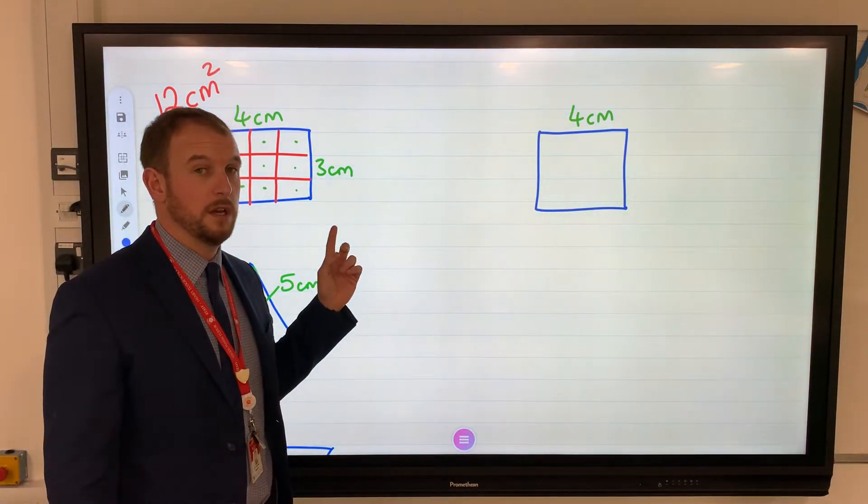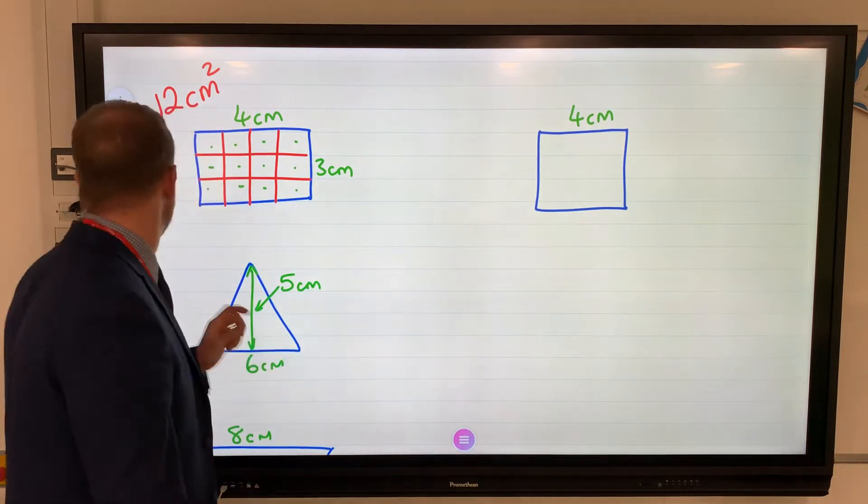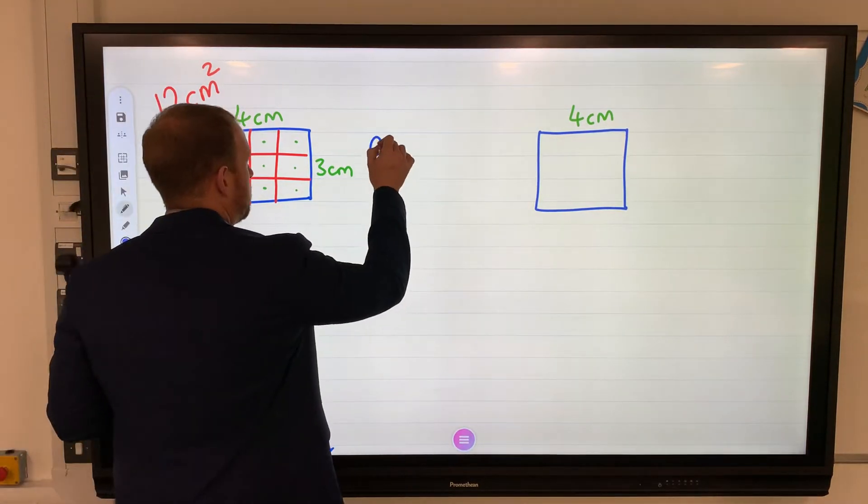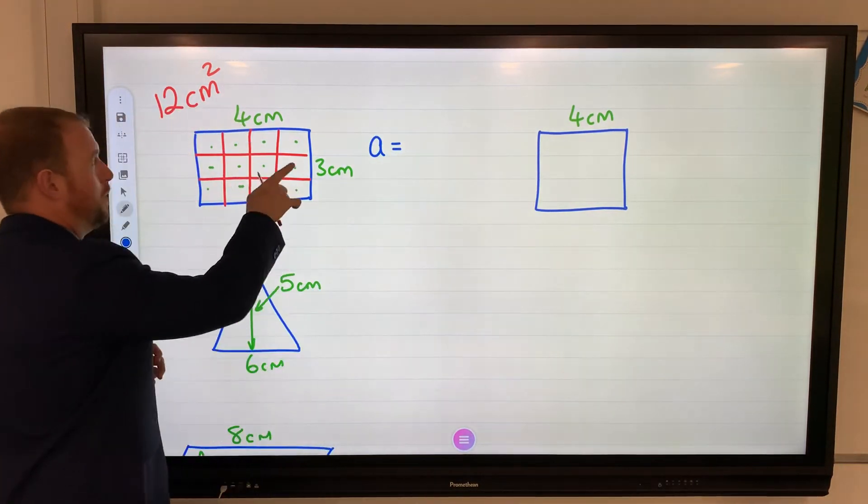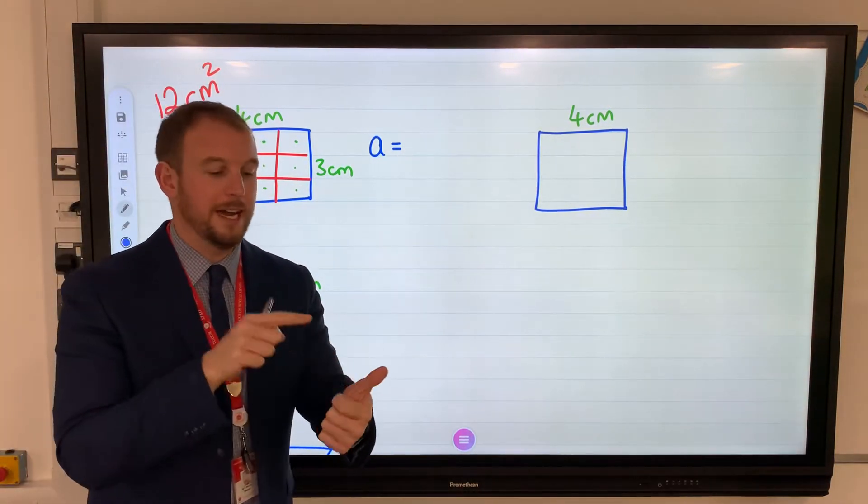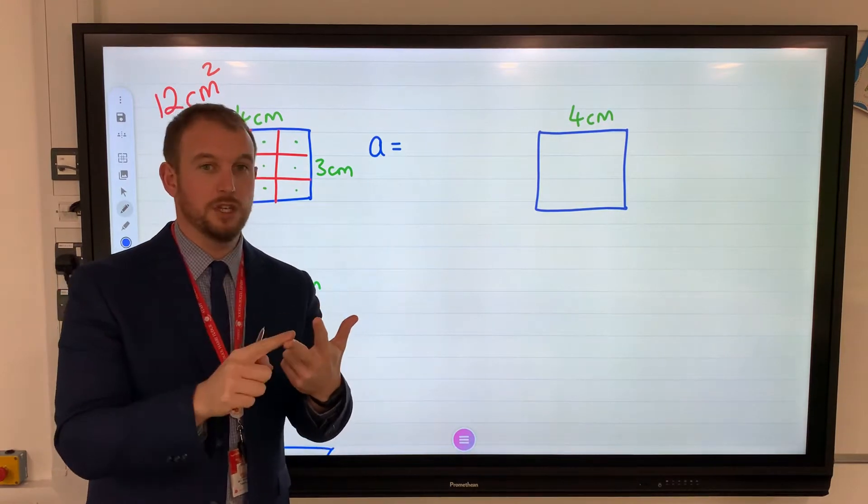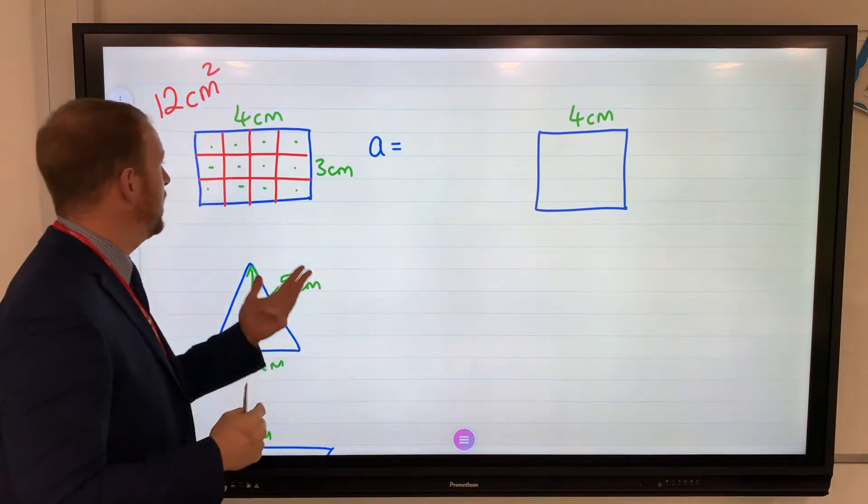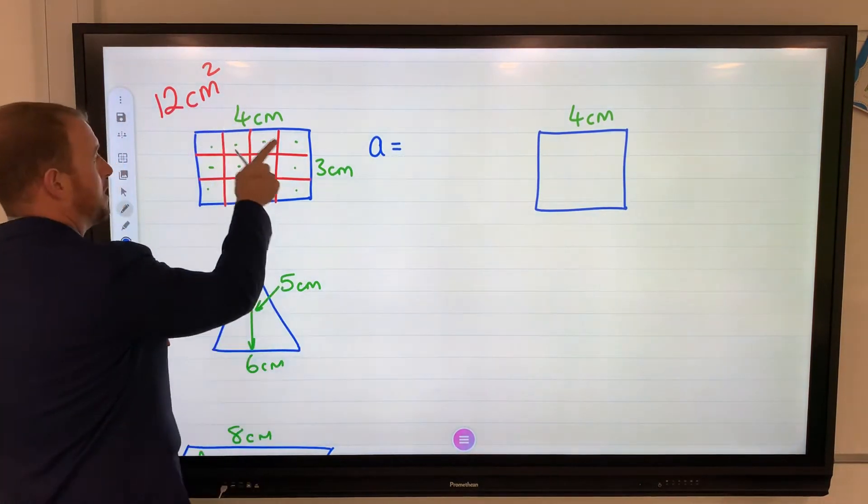...don't always get given the squares. We need to use a formula. There is a relationship between the length and width to make the area. Which operation have we used? Divide? Subtraction? Addition? Multiplication? We have multiplied, because four times three is twelve.